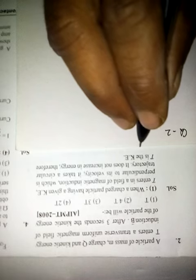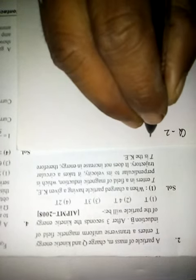It means a charge particle of charge Q enters in a perpendicular magnetic field. Transverse means perpendicular magnetic field. It means the velocity is perpendicular to the magnetic field.